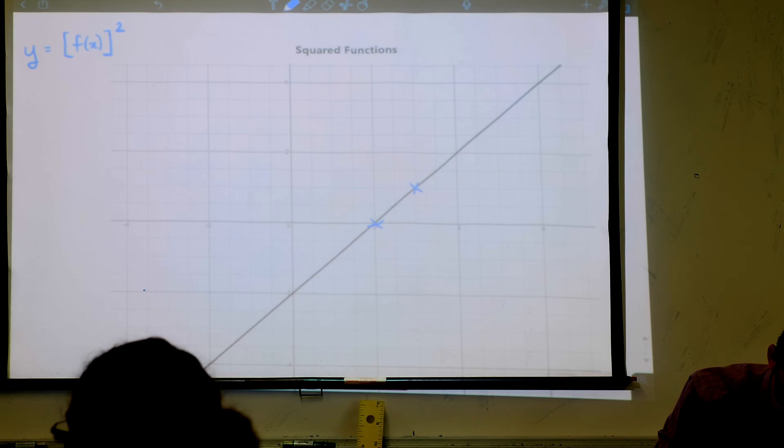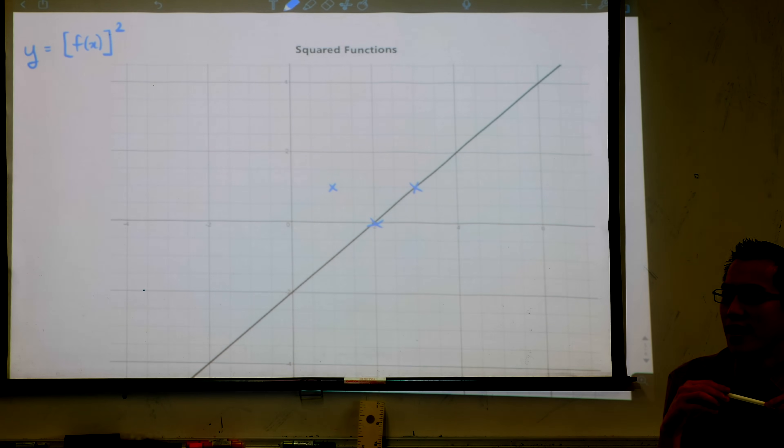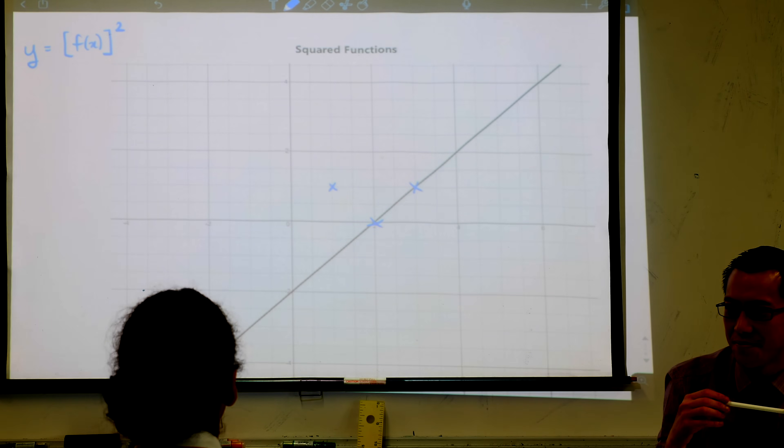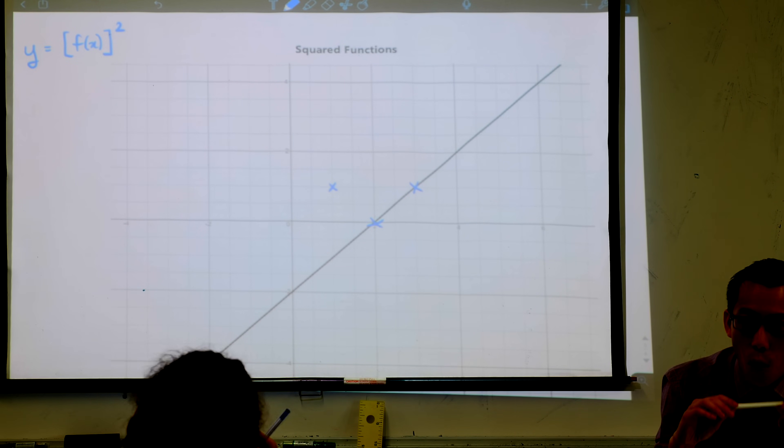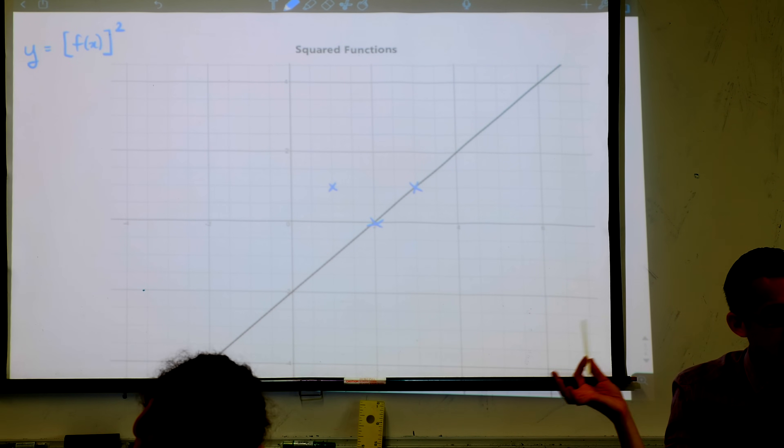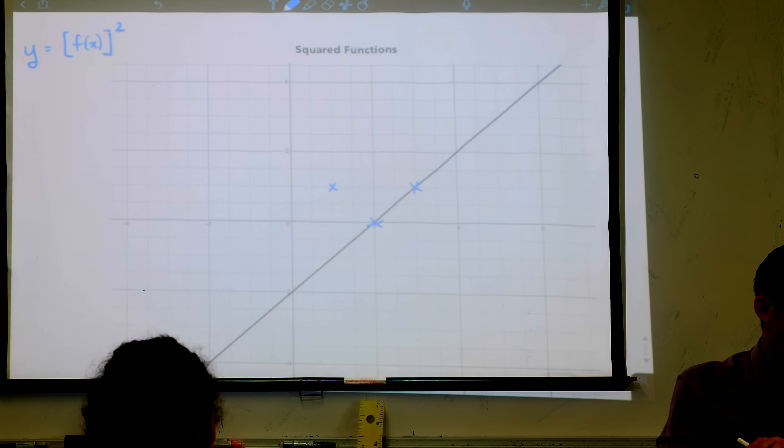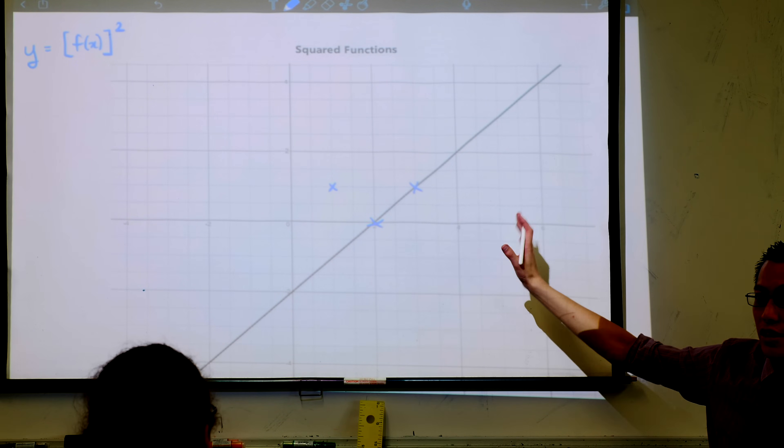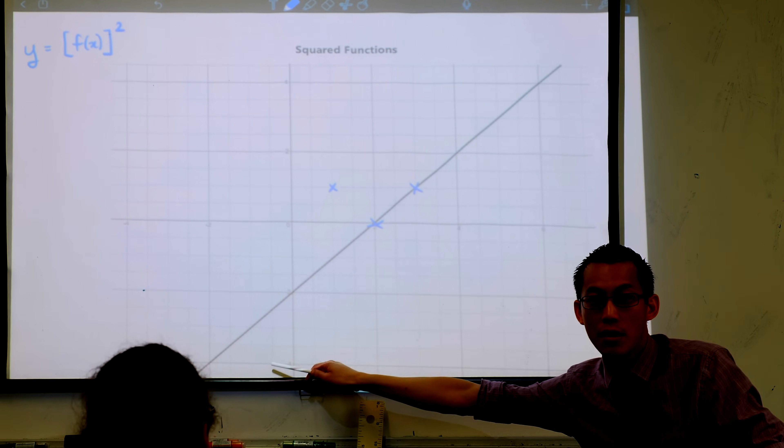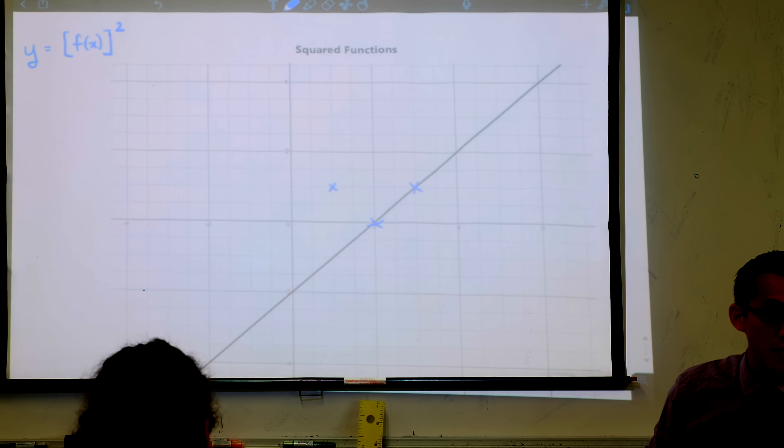Now think about this for a second. When you square something, you always get out a positive answer. So in this case, unlike in the previous one, I don't really need to worry about that sign. This negative stuff, once it's squared, it's going to be just like the positive stuff.